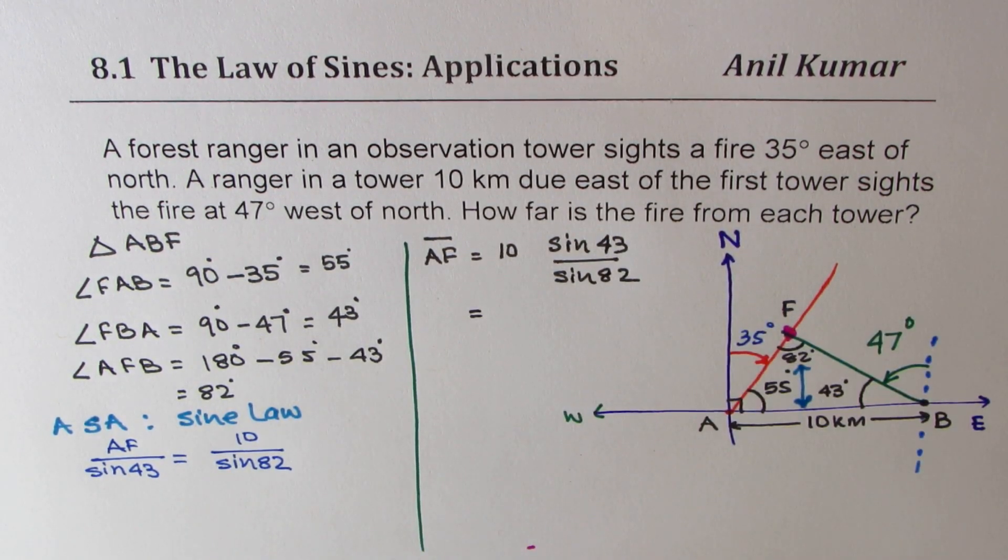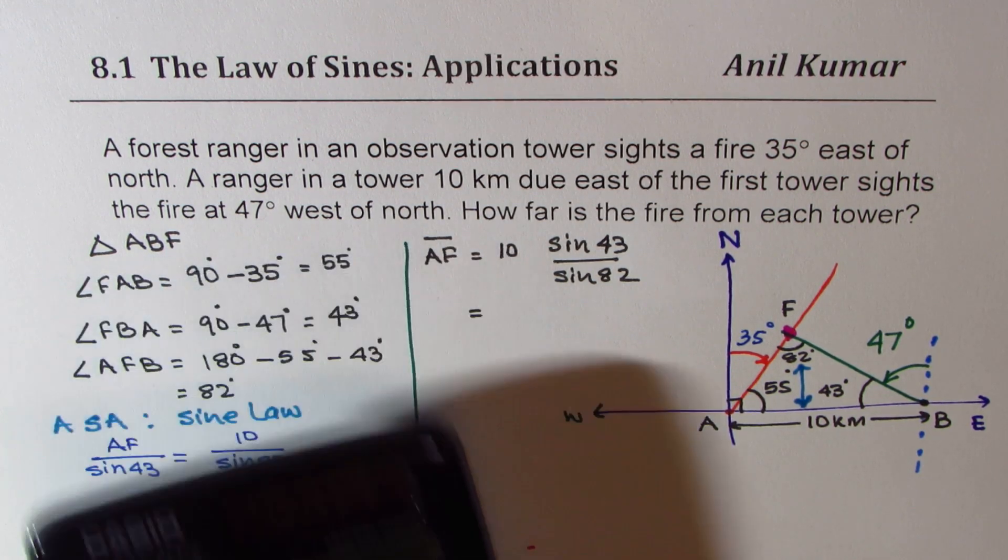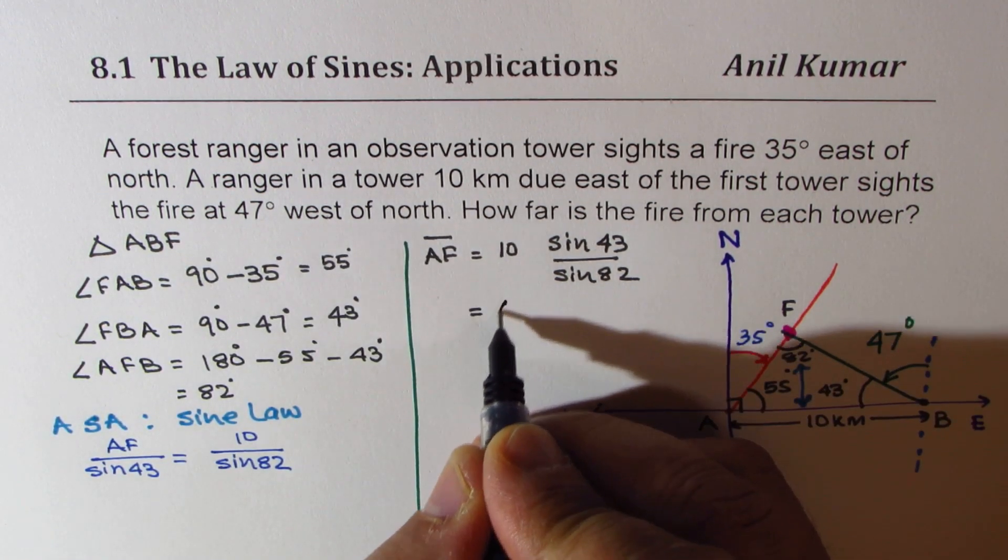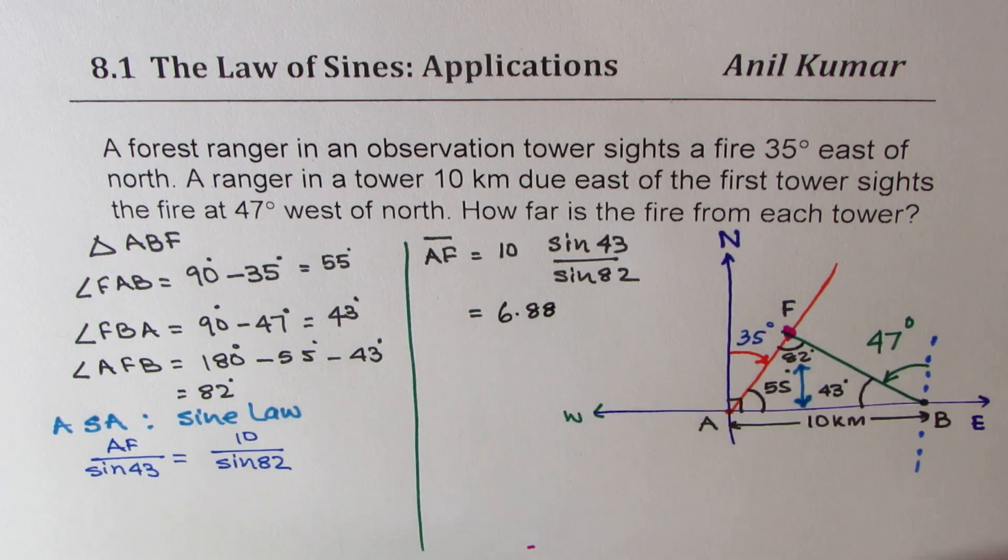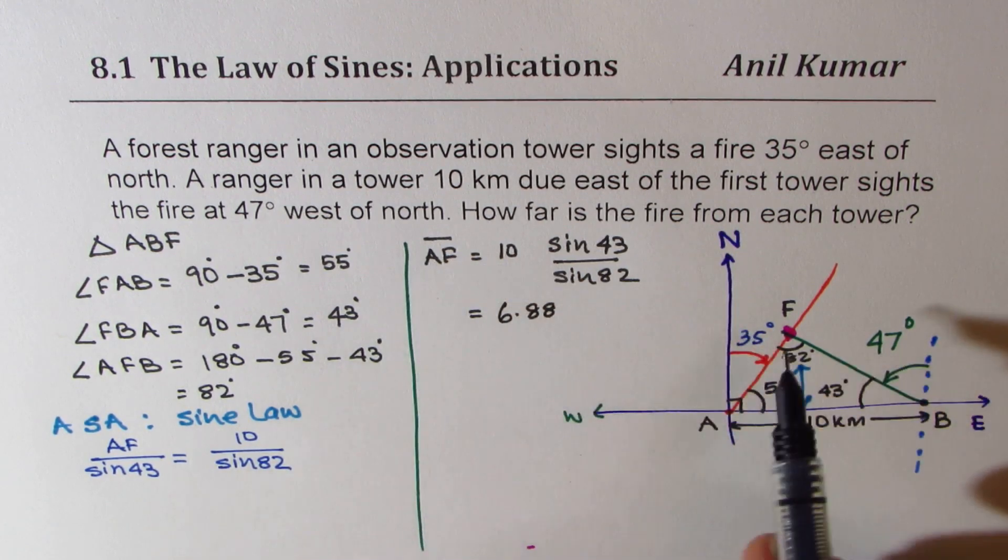Let's calculate. So we have 10 times sine of 43, and we'll divide this answer by sine of 82. So it is equal to 6.88. So we know what AF is.